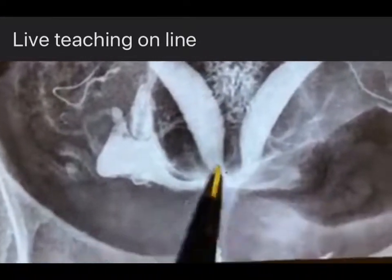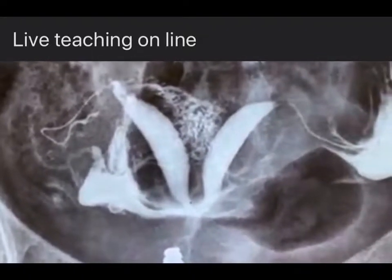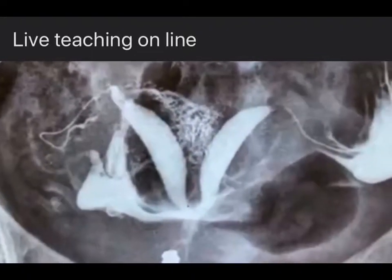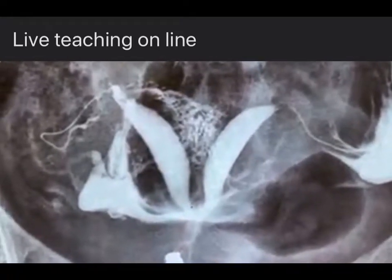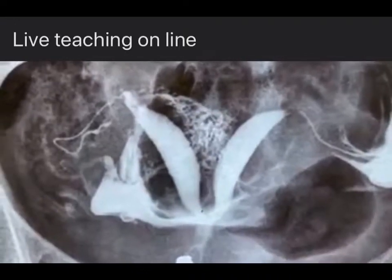If this angle is more than 90 degrees, you cannot tell. You have to do 3D ultrasound to distinguish between a septum, which is a U2 anomaly, and bicornuate, which is U3.